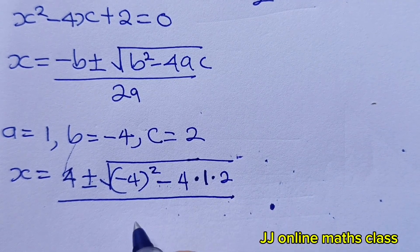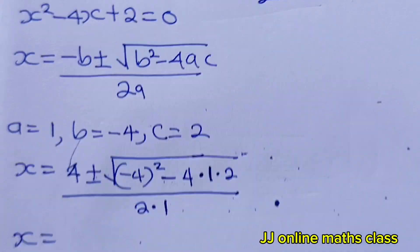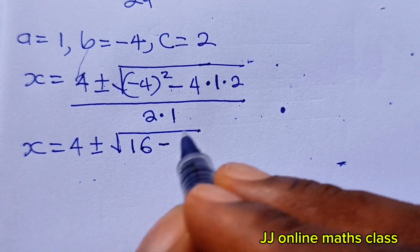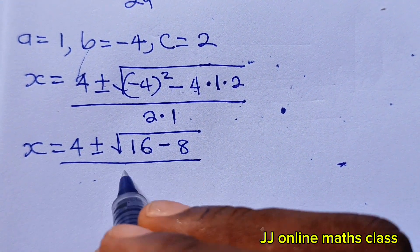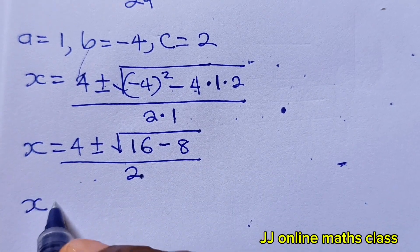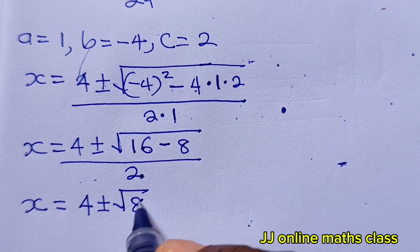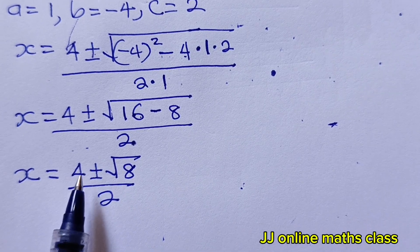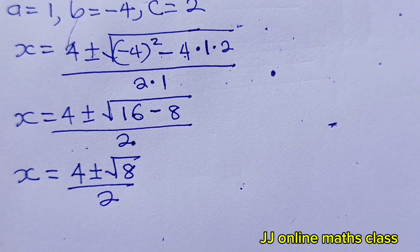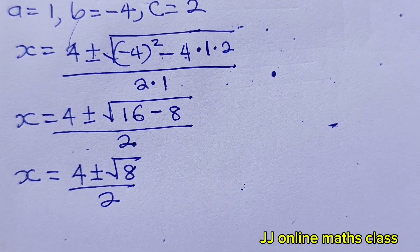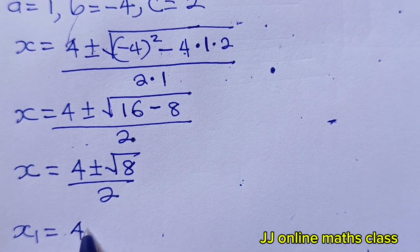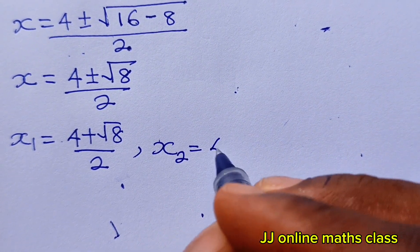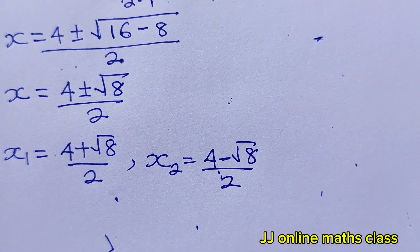So x = (4 ± √(16 − 8)) / 2 = (4 ± √8) / 2. This gives two values: x₁ = (4 + √8) / 2 and x₂ = (4 − √8) / 2.